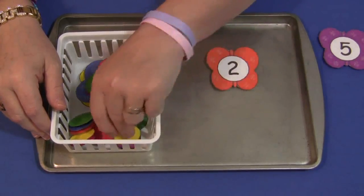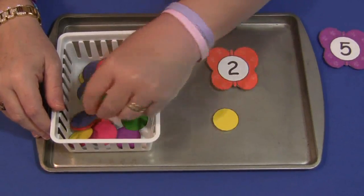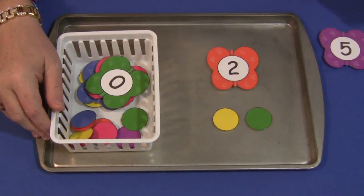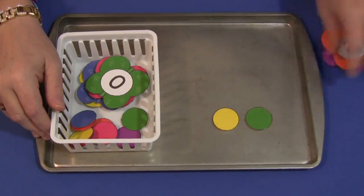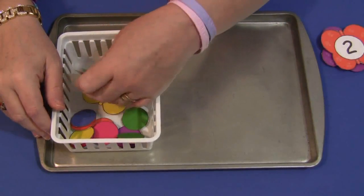This one's got two on it and then they would pick out two circles for that, and they would just continue until they've done all the butterflies that you have set out.